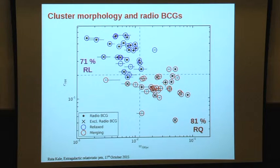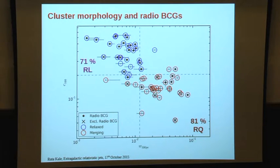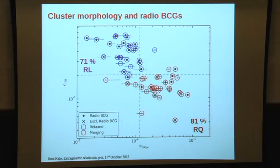This is the plot of concentration parameter versus centroid shift. Relaxed clusters are the blue circles and red are the merging clusters; a black dot at the center indicates whether the BCG is radio loud. About 71% of relaxed clusters have radio-loud BCGs, whereas 81% of merging clusters have radio-quiet BCGs.